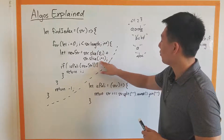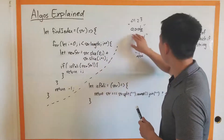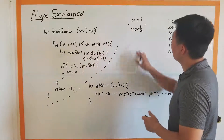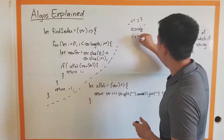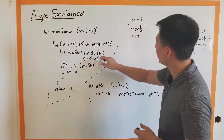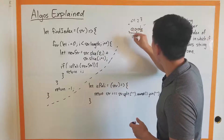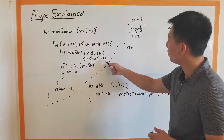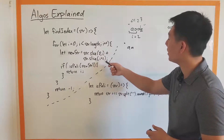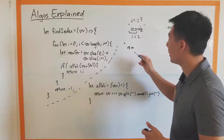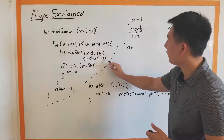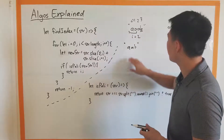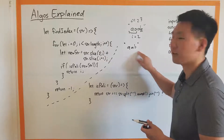So what we did here — let's pretend i is two looking at the string A, A, B. We do string.slice from zero to two, taking the first two A's. Then i plus one is three, so string.slice(3) takes everything from the B to the end. We concatenate those together and send that to our helper function, which will return false because that is not a palindrome.